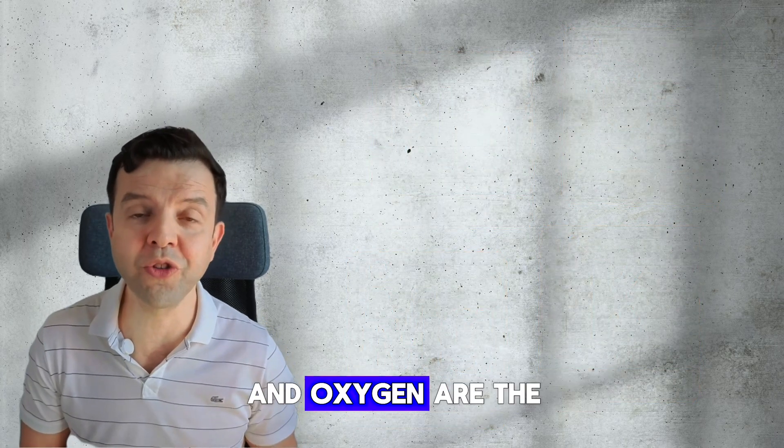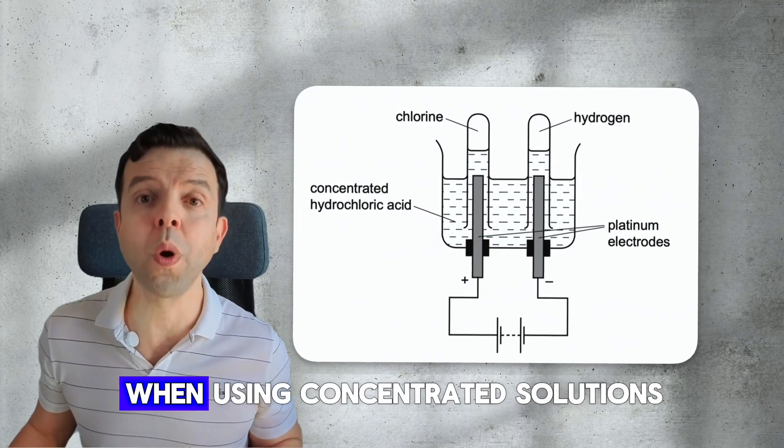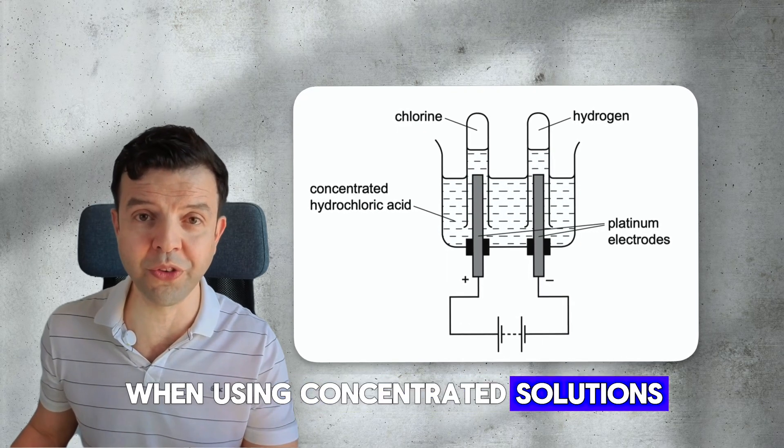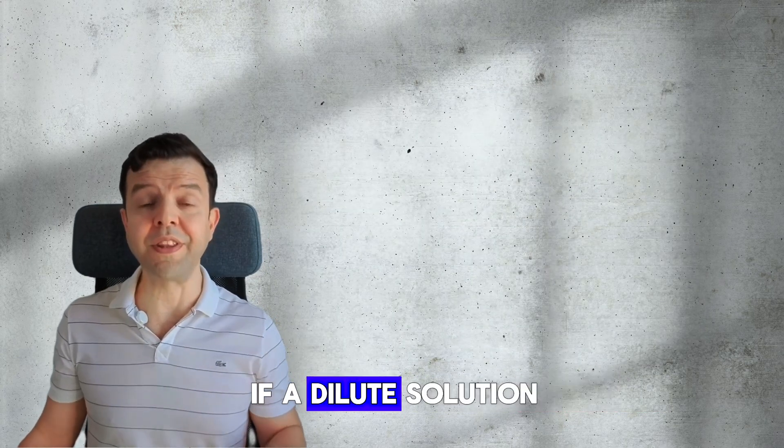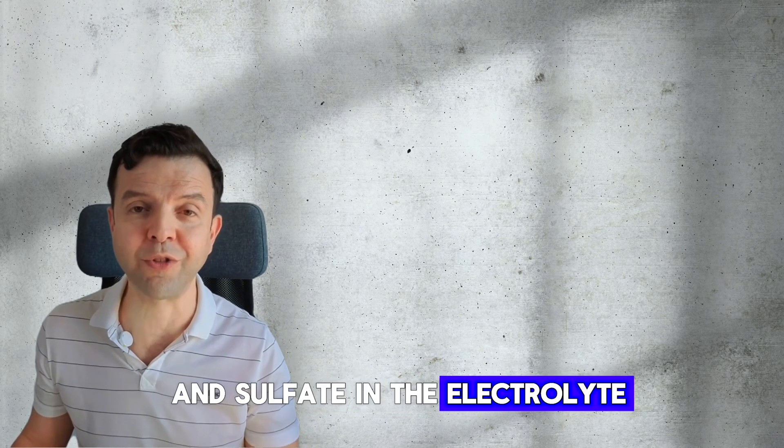Halogens and oxygen are the gases that appear at the anode. Halogens only appear at the anode when using concentrated solutions. Oxygen appears at the anode if a dilute solution was electrolyzed or when having nitrates and sulfates in the electrolyte.